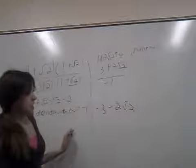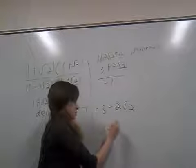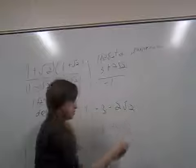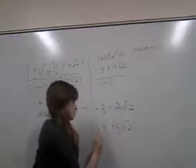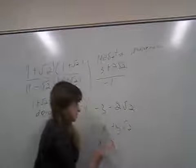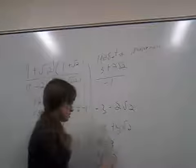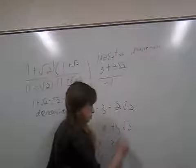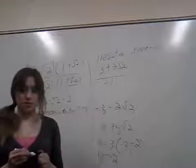And so the form that they asked us about was x plus y root 2. So this means that x is negative 3 and y is negative 2. So if you wanted an ordered pair form, that's your answer.